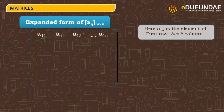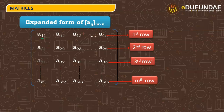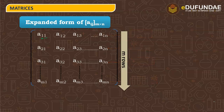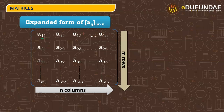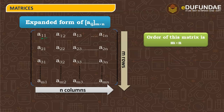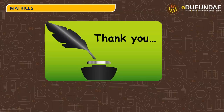In the expanded form of matrix [aij] m by n, elements go from a11, a12, a13, up to a1n in the first row; a21, a22, and so on; through to am1, am2, am3, up to amn in the last row. This matrix has m rows and n columns, so its order is m by n — where m is the number of rows (horizontal lines) and n is the number of columns (vertical lines). I hope this session was productive for you. Thank you.